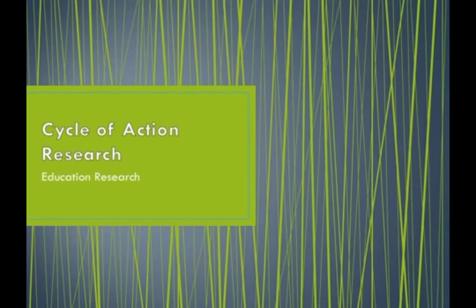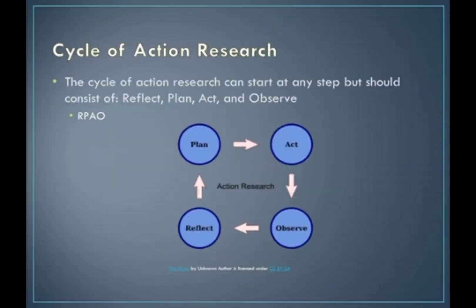This video is about the cycle of action research. Conducting action research always works in this cycle. It's a cycle because you could start at any part or any step — it really depends on what's happening in the field. Because action research is a combination of research and practitioner work, it could start at any portion depending on what the problem or research topic is. But it always goes through the different steps of the cycle, which are: reflect, plan, act, and observe. You could start anywhere, but you always have to go through these four steps to complete your action research.